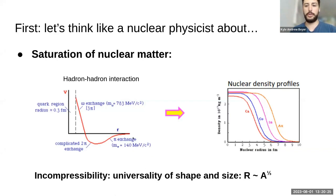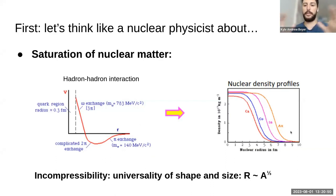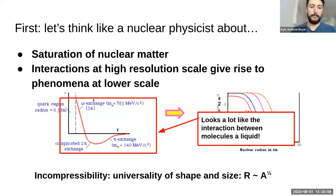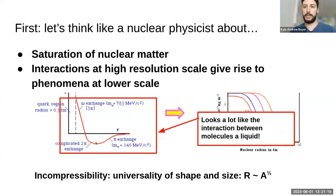Because nuclei want to be at a certain distance from each other — not much more, not much less — we see what's called the incompressibility or saturation density of nuclear matter, where all nuclei, no matter how many nucleons they have, have the same density profile. The radius scales with the mass number to the power of one third, and they all have this soft decrease in density at the edges — a little bit fuzzy at the edges. We can essentially treat nuclei almost like a liquid, because this looks a lot like the interaction between molecules in a liquid at an equilibrium distance, causing nuclear matter to be an incompressible fluid.